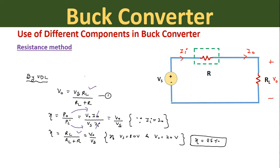If we take the input source voltage to be 80 volts and the output voltage to be 20 volts, the efficiency of this circuit will be equal to 25 percent. So this efficiency is not acceptable.